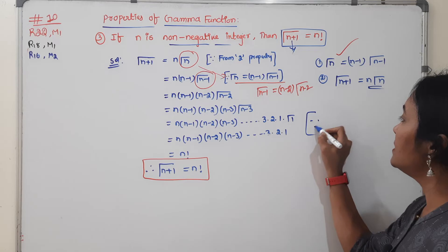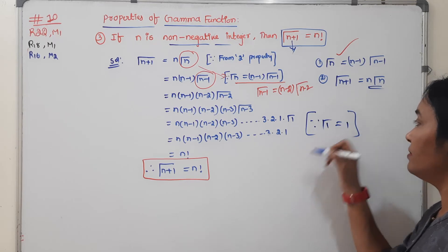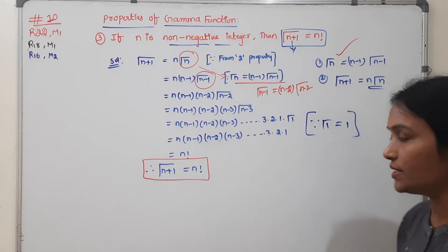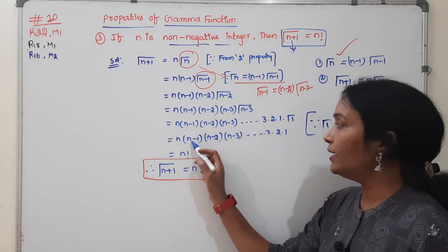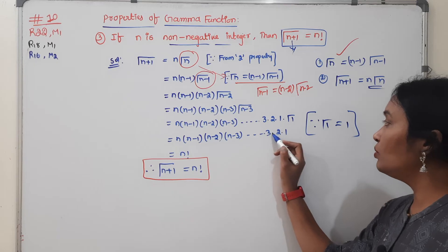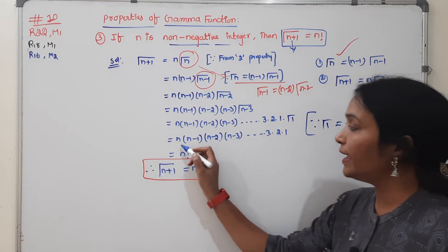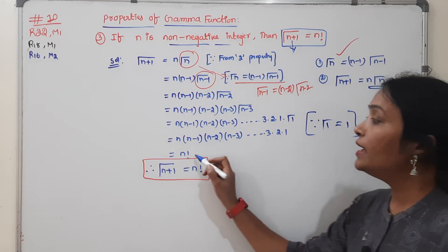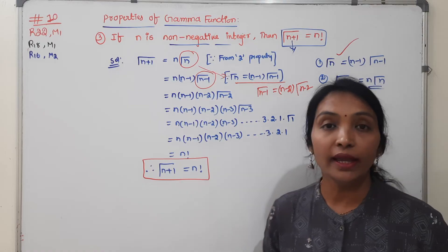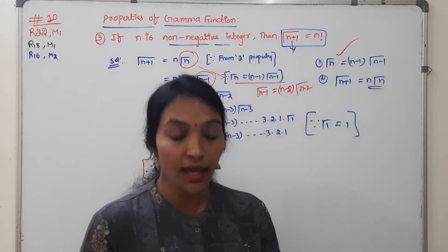Since Gamma(1) = 1, the result becomes n × (n−1) × (n−2) × ... × 1, which is nothing but n factorial.